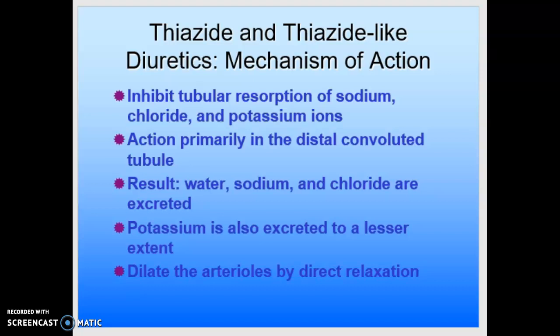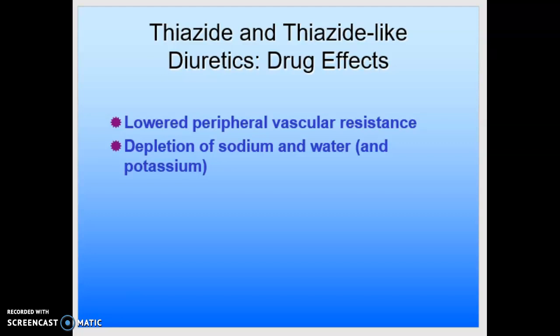The result is frequent urination due to increased loss of water, sodium, and chloride — all excreted. Potassium is also excreted, but to a lesser extent. These drugs dilate the arterioles by direct relaxation, and the long-term antihypertensive action is based on this effect, resulting in decreased preload and decreased blood pressure. Consequently, we have lower peripheral vascular resistance and depletion of sodium, water, and some potassium.